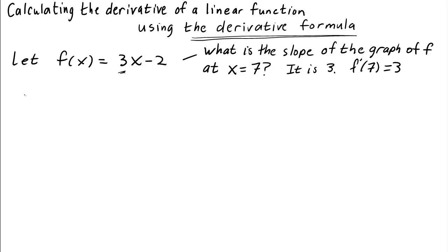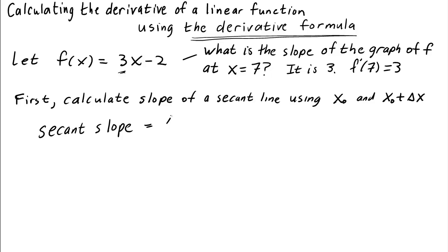The derivative formula is the formula for the slope of the tangent line as a limit of secant lines. So first, let's calculate the slope of a secant line using the values x0 and x0 plus delta x. So here we're going to use x0 equals 7, and let's make delta x be something small, let's say 0.1.